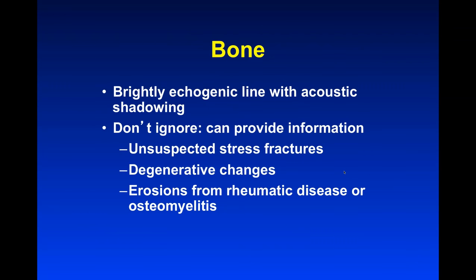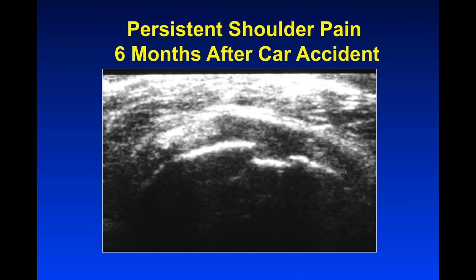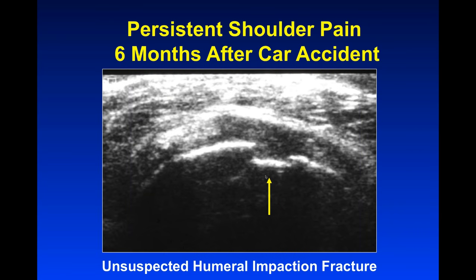Bones are brightly echogenic lines with acoustic shadowing. Don't ignore bones — they can provide important information. You may see unsuspected stress fractures, degenerative changes, and erosions from rheumatic disease or osteomyelitis. This is a woman with persistent shoulder pain six months after a car accident. Her initial x-ray was negative, and she couldn't have an MRI because of claustrophobia. We did not find a rotator cuff tear, but the patient pointed to where she hurt and we placed the probe there — revealing a depressed piece of bone: an unsuspected humeral impaction fracture. These are very hard to see on x-ray. Ultrasound saved the day and she could then be treated properly.